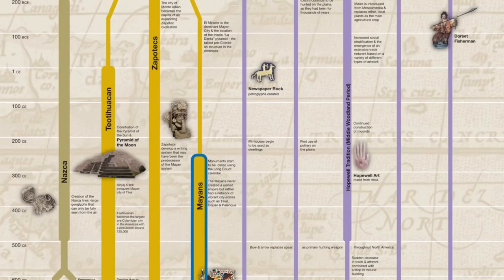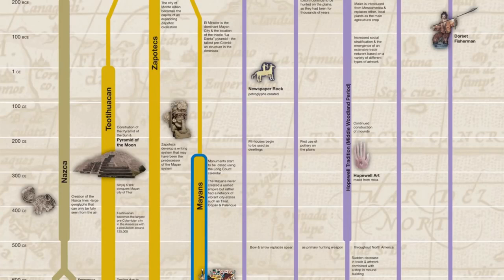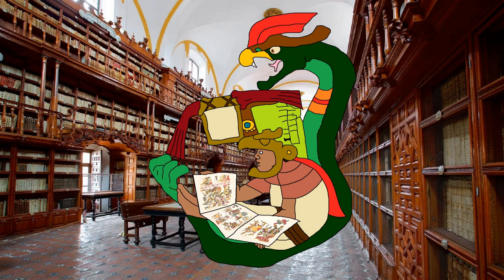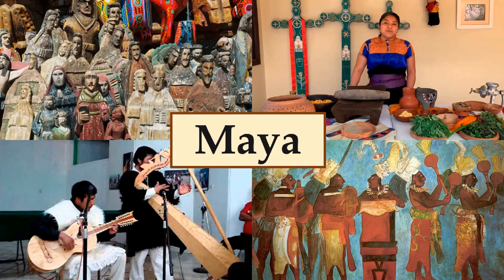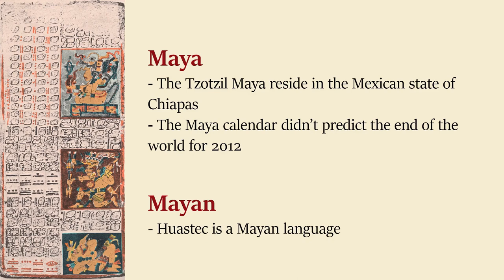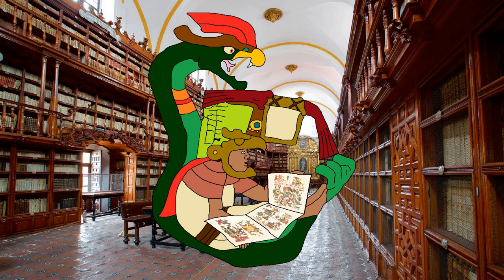Perhaps more well known is the nearby Mayan civilization, which existed around the same time. The reason why we know so much about the Mayans is because their writing system was deciphered in the 20th century. This is a common mistake — many people use Mayan to label anything related to the Maya peoples and their cultures, but the truth is that Mayan isn't the correct way to refer to those. The peoples, their cultures and products are identified with the label Maya, while Mayan is only used for the languages spoken by those peoples. For example, the Xotzil Maya reside in the Mexican state of Chiapas, and Huastec is a Mayan language would be a correct usage of the word Mayan.